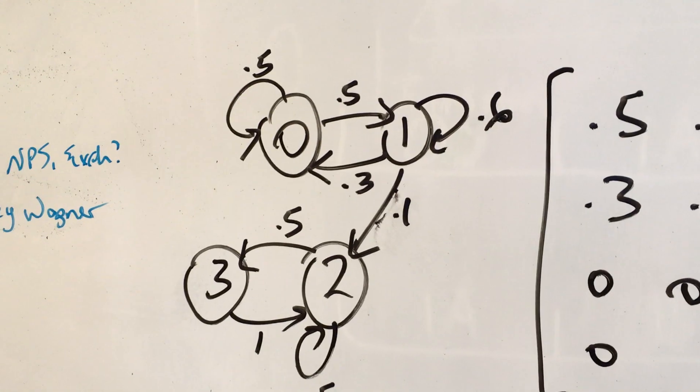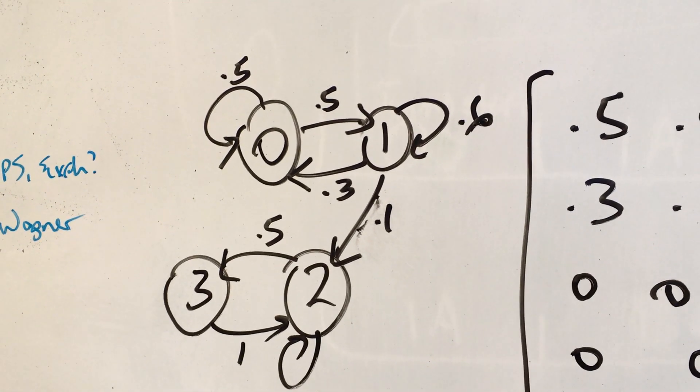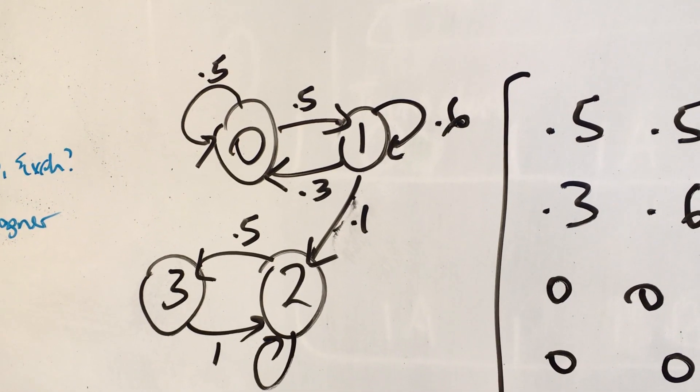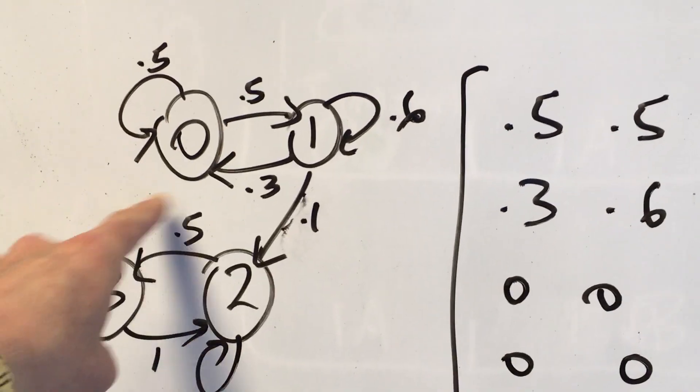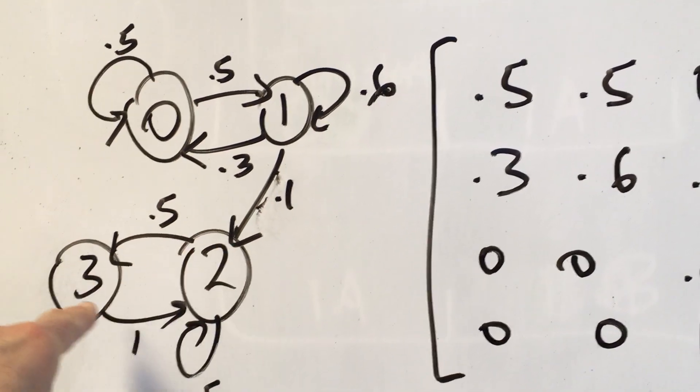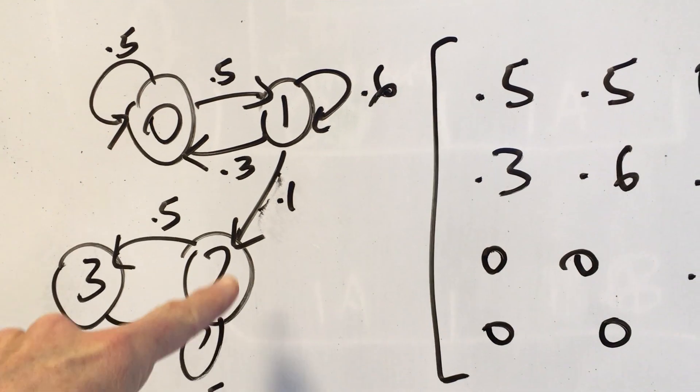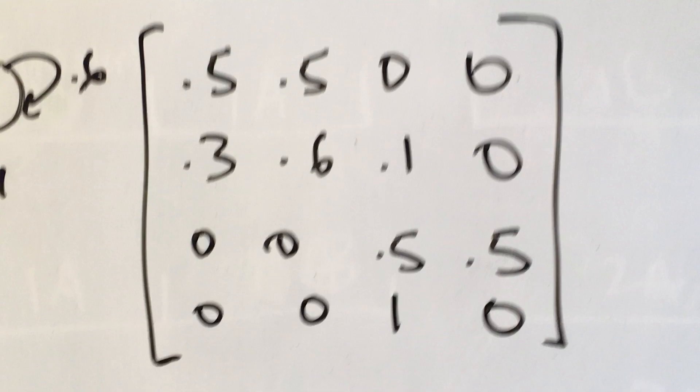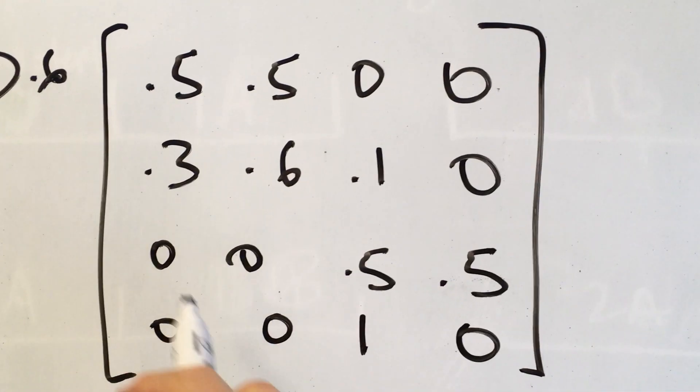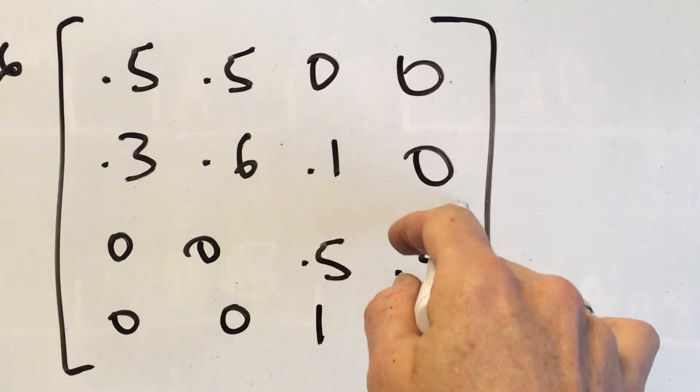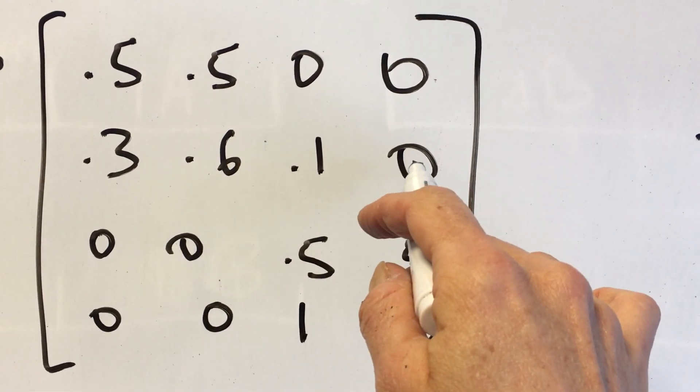So let's take this example. We've got two classes, four states, zero and one, which is transient, right? Because these guys can go back and forth between each other, but once it gets on state two, then you're going to stay here in the state two, state three loop indefinitely. So here's our transition matrix. So you've got zeros down here because you can't go from two and three into one and two. And up here, there's a possibility that you go to two and three from one and two.